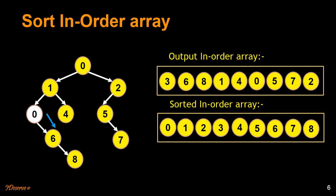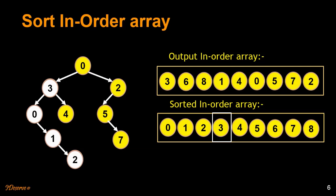Then we traverse towards the right subtree. Since the left subtree of 6 is empty, we replace 6 with 1, which is the next element in the inorder array. Then we traverse towards the right. 8 is the leaf — it doesn't have a left or right subtree — so we replace it with 2, which is the third element in the inorder array. Since the left subtree of 1 is traversed, we replace 1 with 3, which is the next element in the inorder array. Keep an eye on this array as well as the traversal — we are replacing the elements here with the elements here. Then we go towards the right and replace 4 with 4.